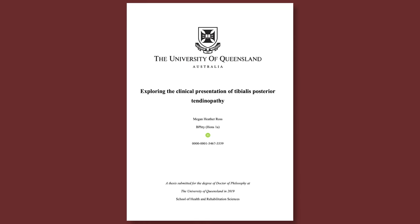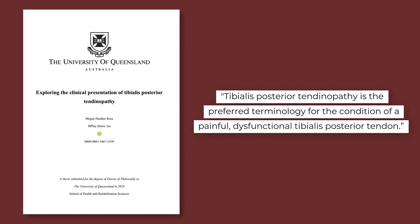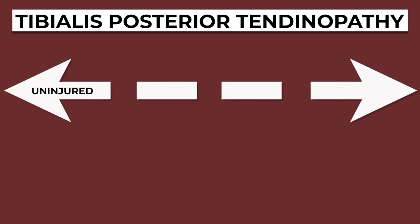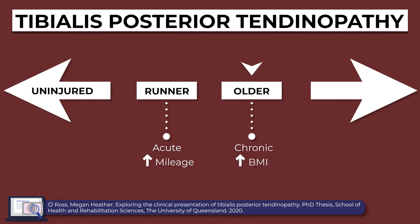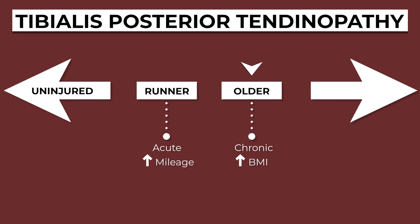Tibialis posterior tendinopathy is the preferred terminology for the condition of a painful, dysfunctional tibialis posterior tendon. Although tibialis posterior tendinopathy is multifactorial, it's easiest to think of this as a load-related issue — the tendon is being loaded more than it can currently handle, and this occurs along a continuum. On one end, this might happen in a young, healthy runner who recently had a spike in mileage, resulting in an acute overload. On the other side, this might be a chronic issue in an older, sedentary individual with a higher body mass, resulting in a significant decrease in function.